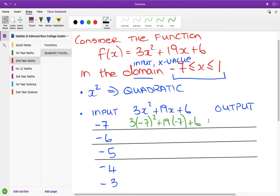Where you type in your 3x squared, your 19x, your plus 6, you get a start value of minus 7. Because that's where we're starting. Our end value is 1 and we go in steps of 1.